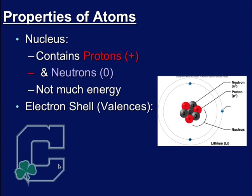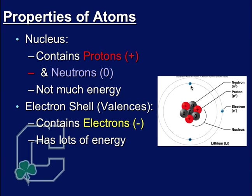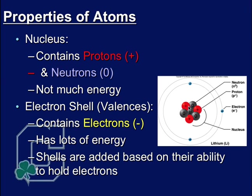Now, around the nucleus are the electron shells, or valences. They contain electrons, which have a negative charge. Now, if you know anything about positives and negatives, you know that they attract. Well, it's actually that attraction of positive and negative that keeps the electrons spinning outside the nucleus because they're so full of energy, they would literally just spin off into oblivion if they could, but that pull from these large protons keeps them in place. Now, electron shells are added based on their ability to hold different numbers of electrons.